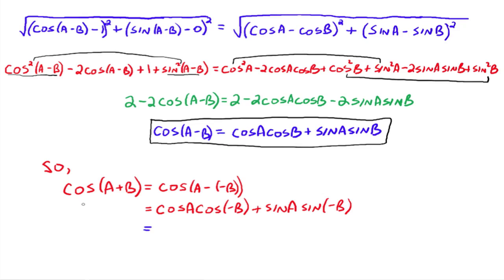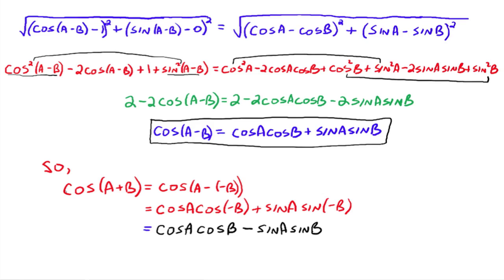Now we know that cos(A+B) = cos(A−(−B)). Using the identity we just derived, that equals cosA · cos(−B) + sinA · sin(−B). Since cosine is an even function, cos(−B) = cosB. Since sine is an odd function, sin(−B) = −sinB, which changes the plus to a minus. So cos(A+B) = cosA cosB − sinA sinB.